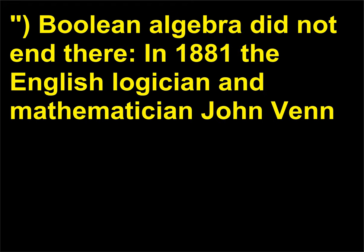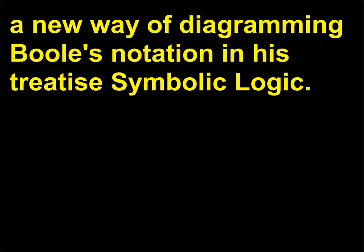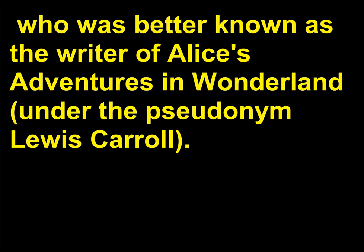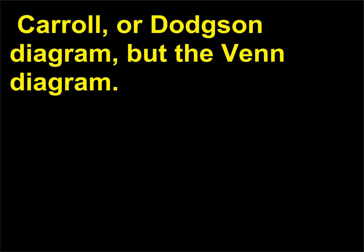Boolean algebra did not end there. In 1881, the English logician and mathematician John Venn (1834–1923) interpreted Boole's work and introduced a new way of diagramming Boole's notation in his treatise Symbolic Logic. This was later refined by English mathematician Charles Dodgson (1832–1898), who was better known as the writer of Alice's Adventures in Wonderland under the pseudonym Lewis Carroll. Today, when studying sets, we call this method not the Boole, Carroll, or Dodgson diagram, but the Venn diagram.